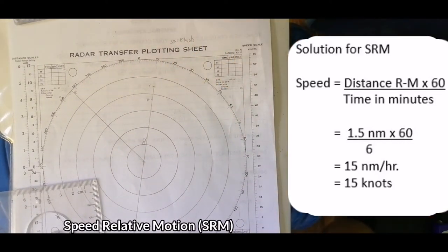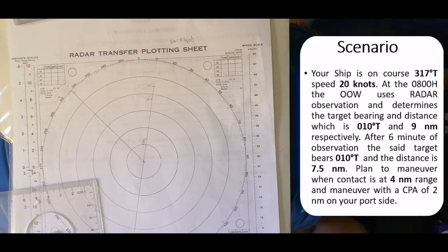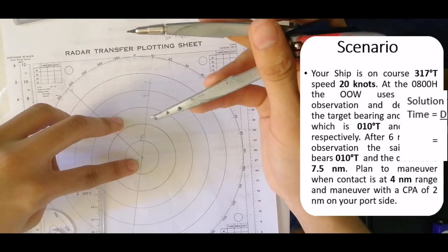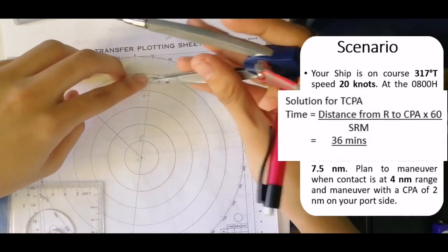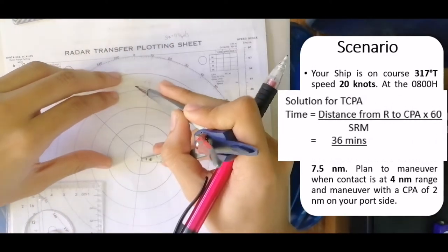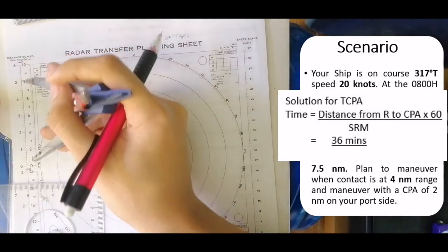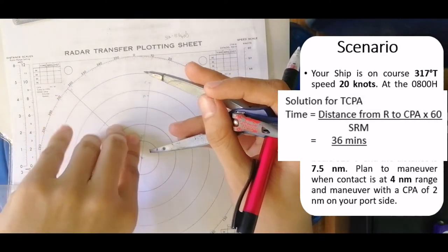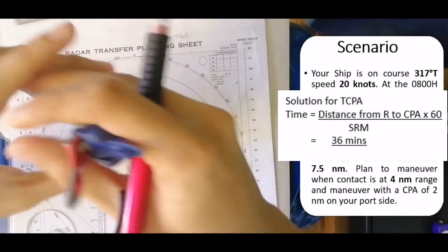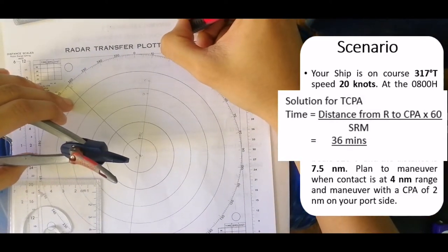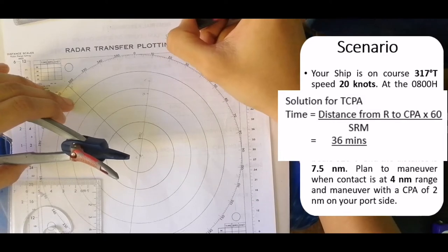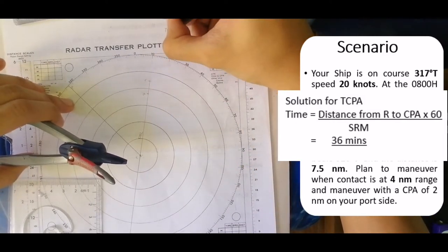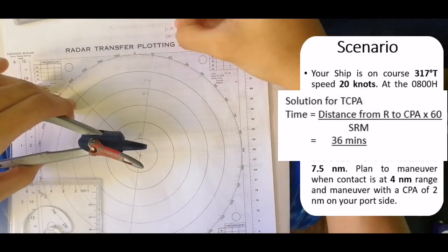Next, measure the CPA. To get the DCPA, take the distance from R to CPA, which is 9, multiply by 60, and divide by the SRM of 15. That gives you a TCPA of 36 minutes.